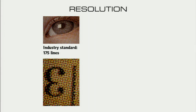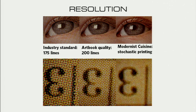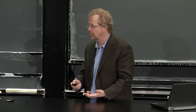This shows what a nerd I am—I'll tell you about how the images were reproduced. Standard halftone screening is 175 lines, and even a good art book goes to 200 lines, but it still has a rectilinear grid, a holdover from placing a screen on top of the plate. We use stochastic screening, which looks a whole lot better, and it's only possible with digital printing technology.